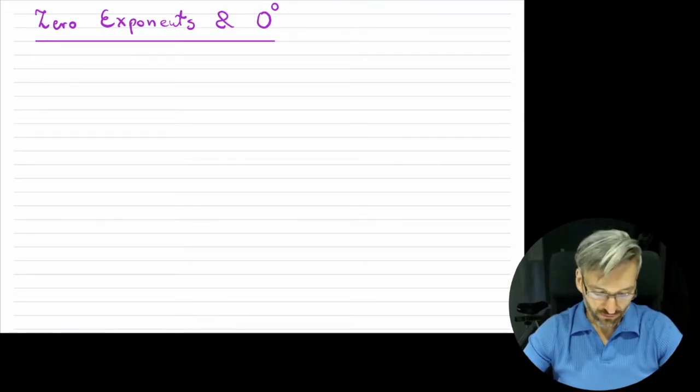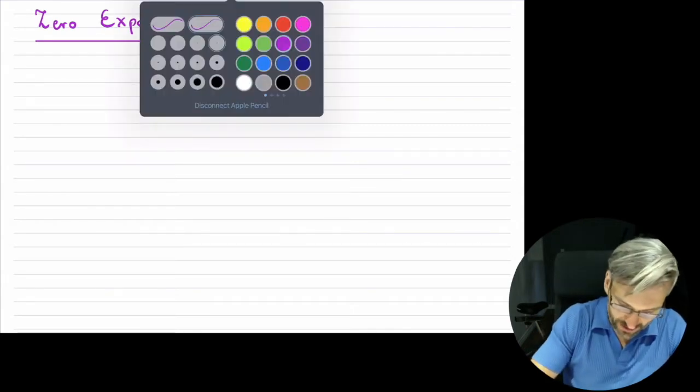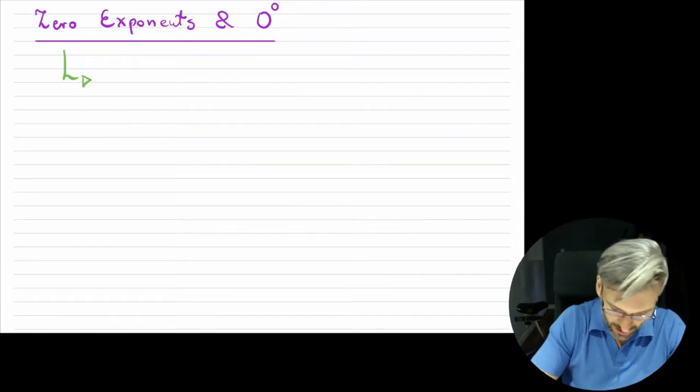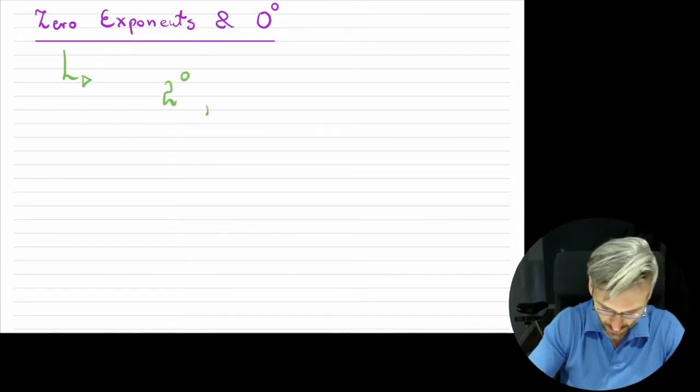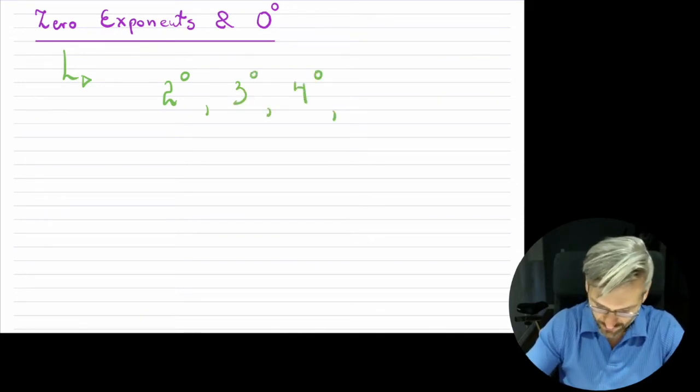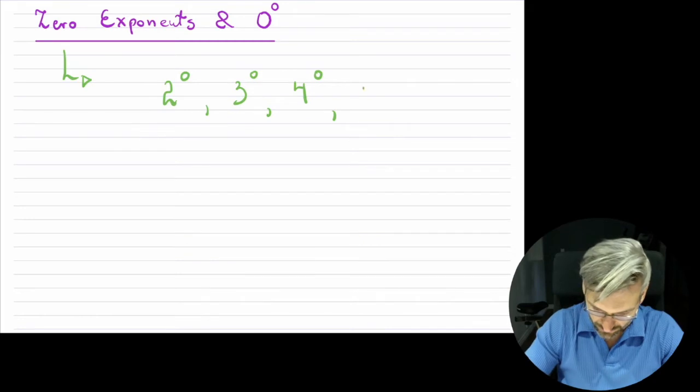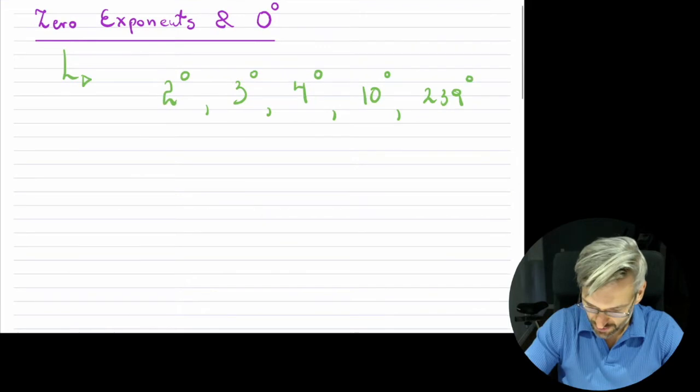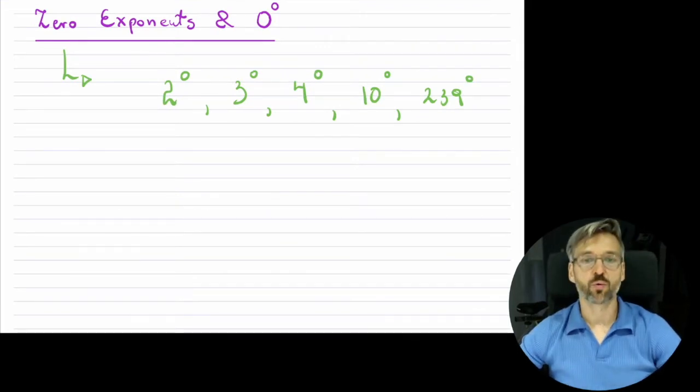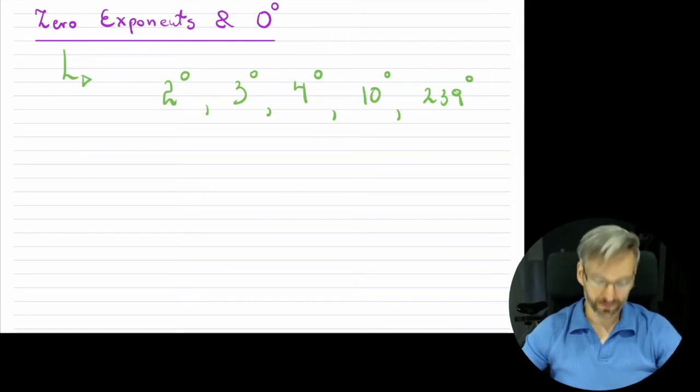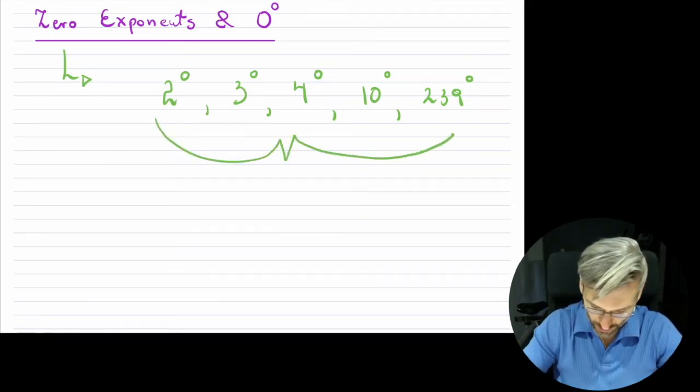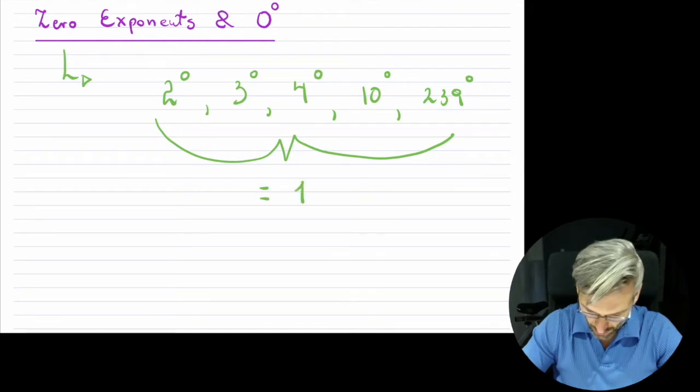So now I'm concentrating on these zero exponents. So I'm basically talking about things of this nature. So if we have two to the power of zero, if we have three to the power of zero, four to the power of zero, you have even ten to the power of zero. It doesn't really matter. The number can be as big as you like. So what do these numbers equal? Now, if you've watched the introduction to exponents, you will notice that actually all of these are equal to one.